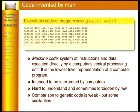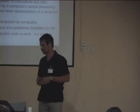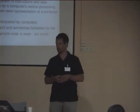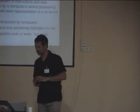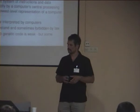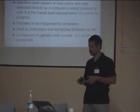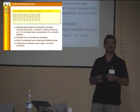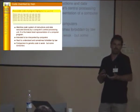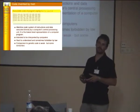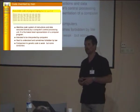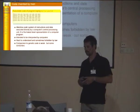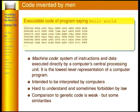Then we have executable code — not invented by nature, but by men. Here you have machine code from an executable that just says 'hello world.' Machine code is a system of instructions executed directly by a computer's central processing unit. It is the lowest level of representation of a computer program, intended to be interpreted by computers, not by men. Sometimes it is even forbidden by law to inspect this code if you have proprietary software.